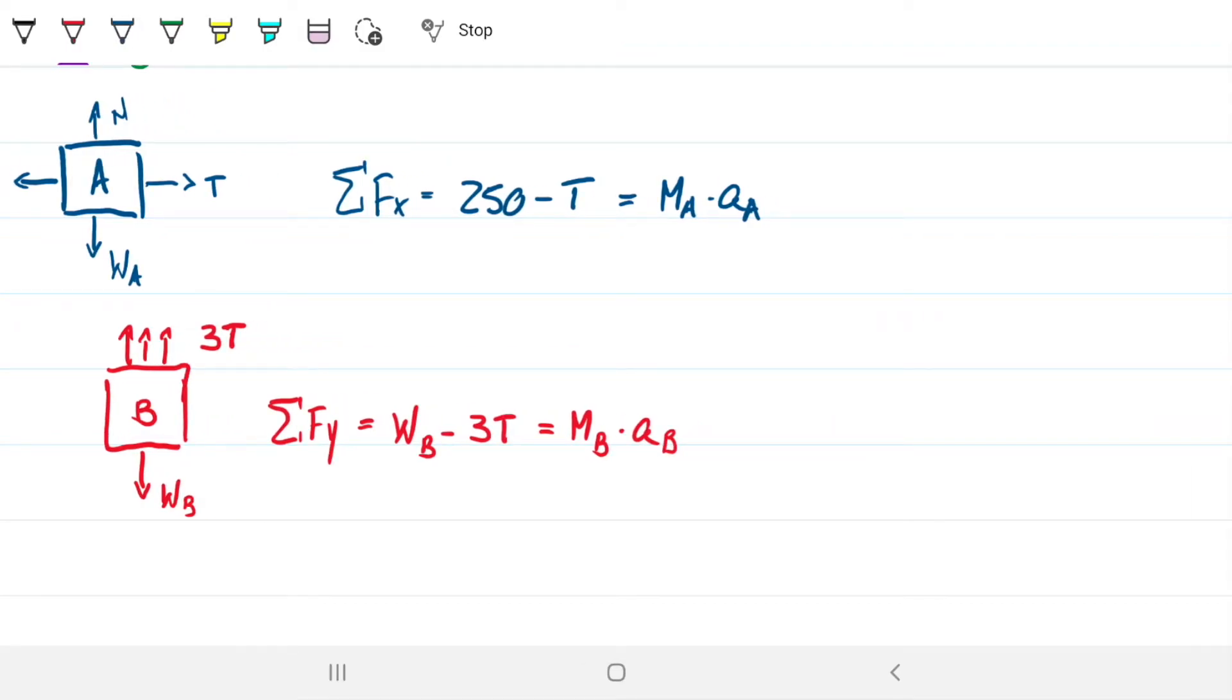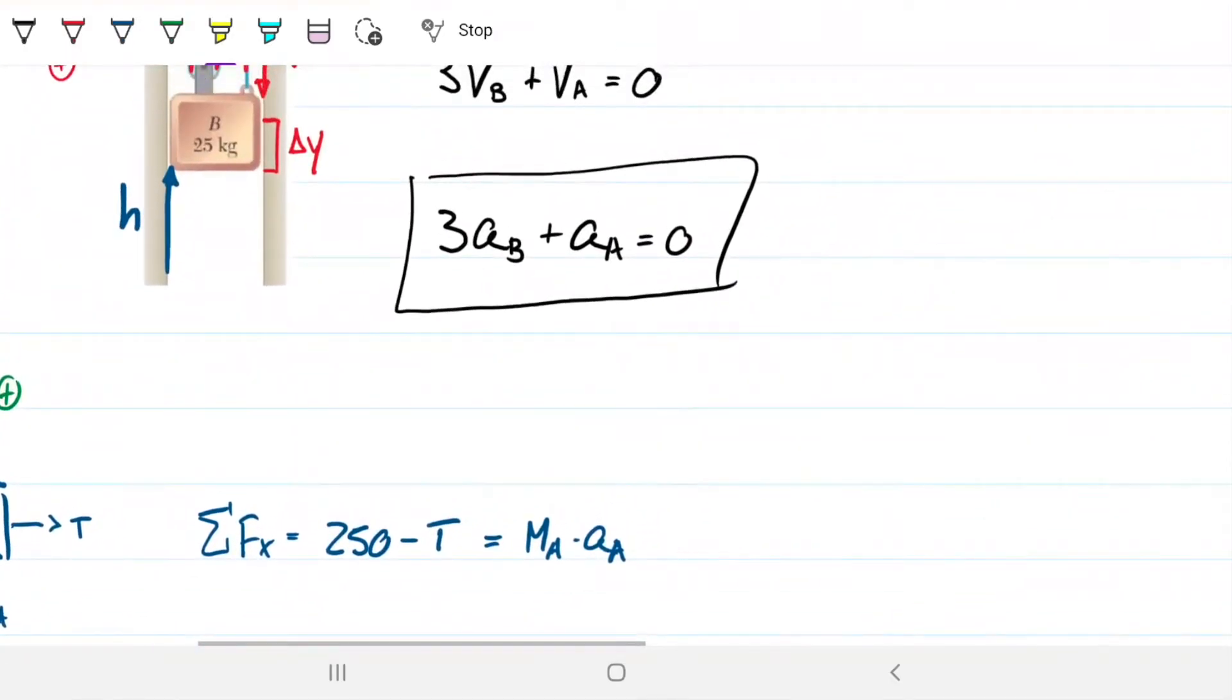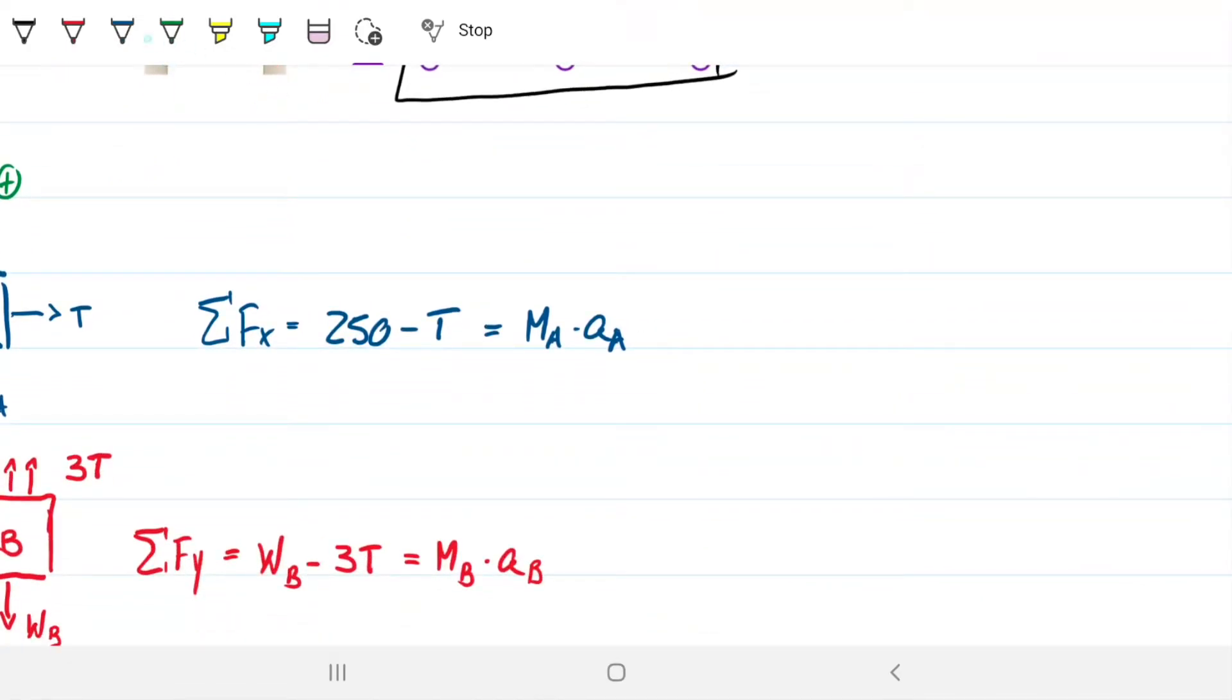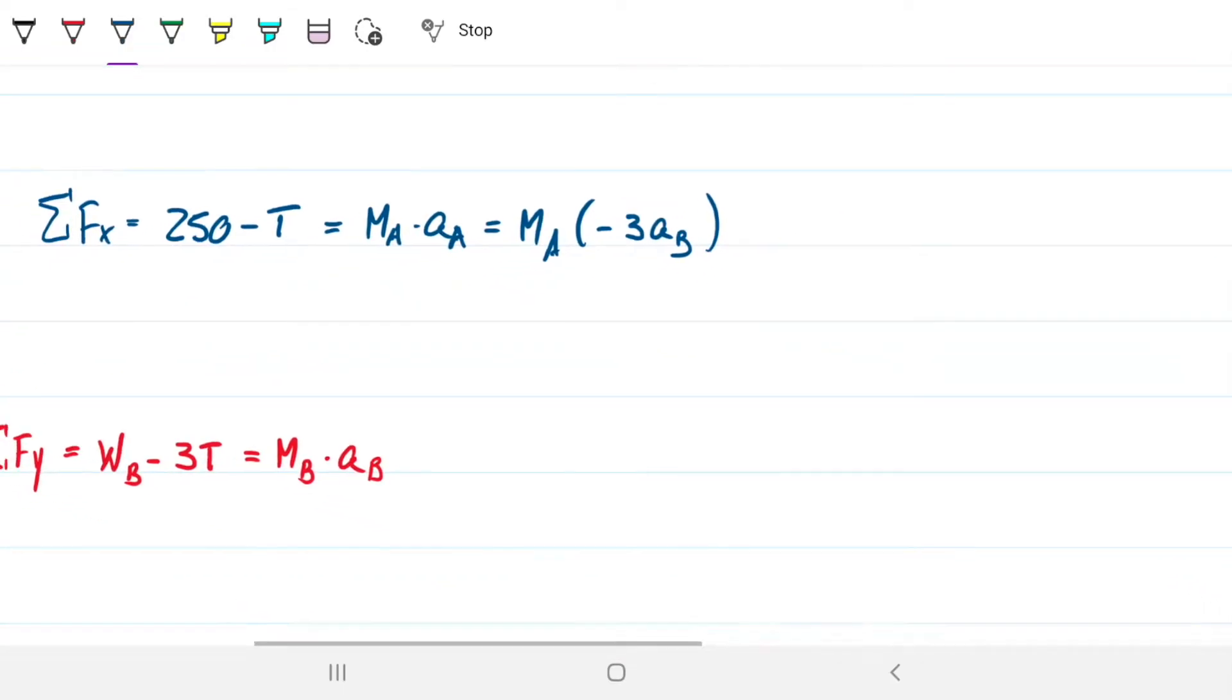And then if I sum my forces here on the y direction, my downwards is positive. So that means that wb minus 3T equals the mass of b times acceleration of b. Okay, so if we look at these two equations, we're going to see that we have the tension as an unknown and the acceleration of a and acceleration of b as unknowns as well. So we have two equations and three unknowns. To be able to get rid of one of them, we need to combine this equation as well. So this equation gives us the third equation that we would need to solve this problem.